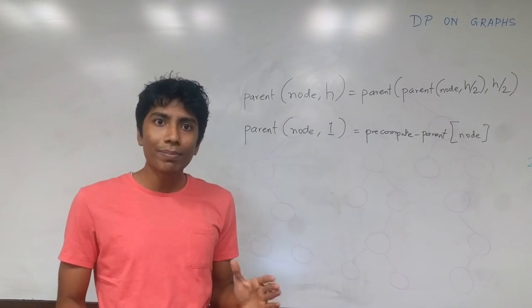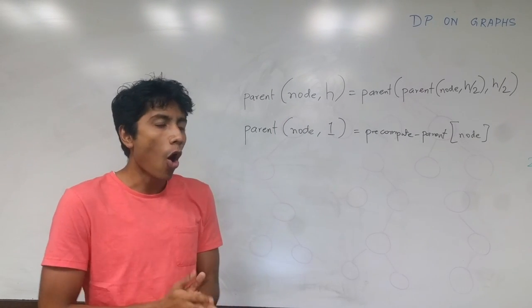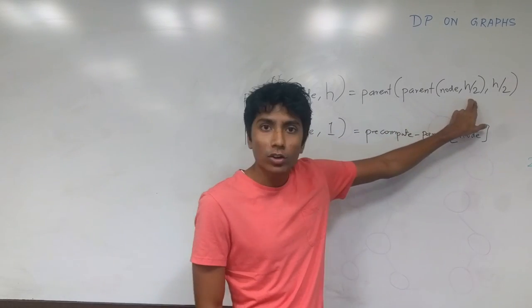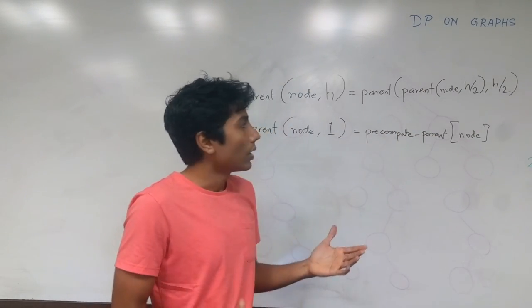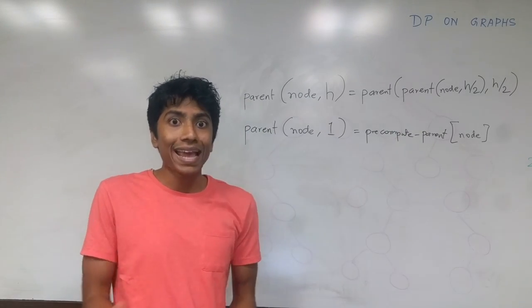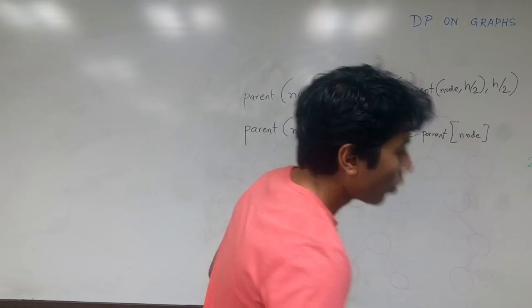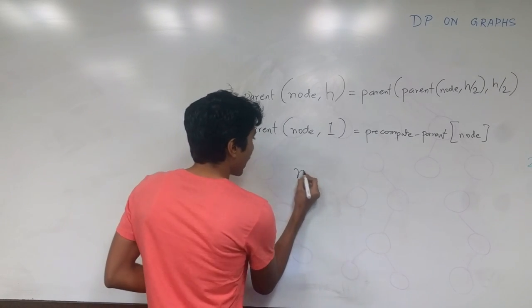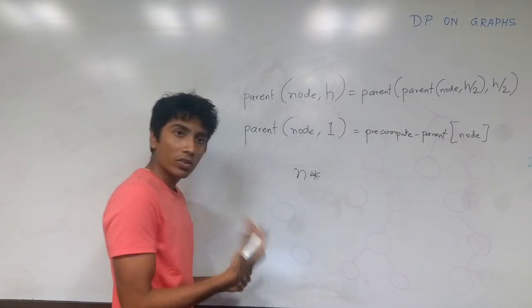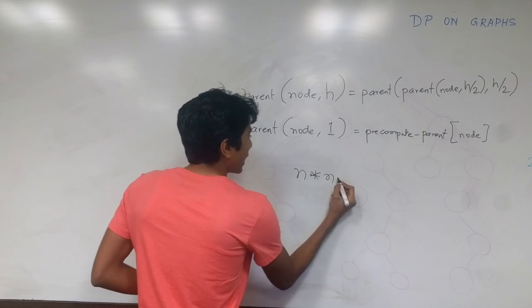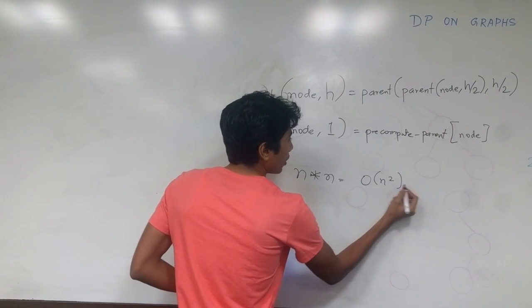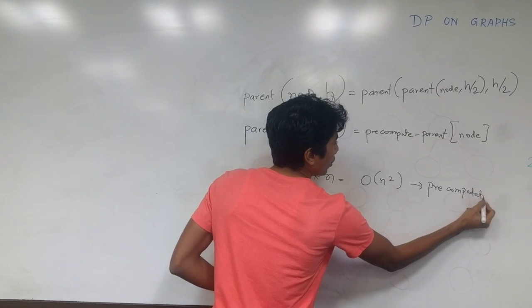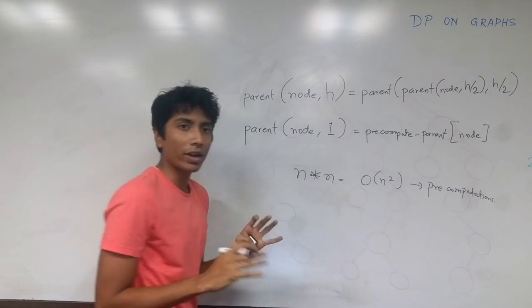So now we can make jumps efficiently. There is H/2 here, and the height of the tree can in the worst case be N. If you do this for every node — which are N in number — and the height in the worst case is N, that gives us O(N²) pre-computations, which is quite a lot.